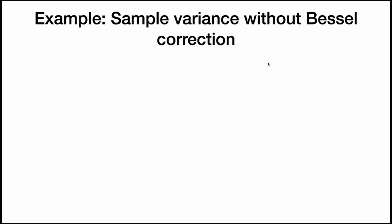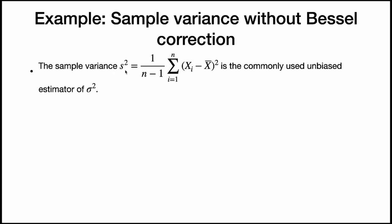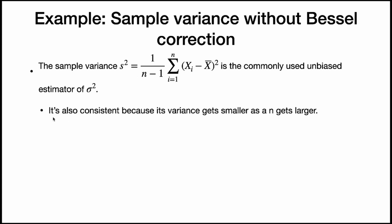Here's another example: the sample variance. When we calculate the sample variance, we usually use 1 over n minus 1, which makes it an unbiased estimator of sigma squared. It's also consistent, because the variance of the sample variance gets smaller as n gets larger, so s-squared does a better job of estimating sigma squared as n increases.